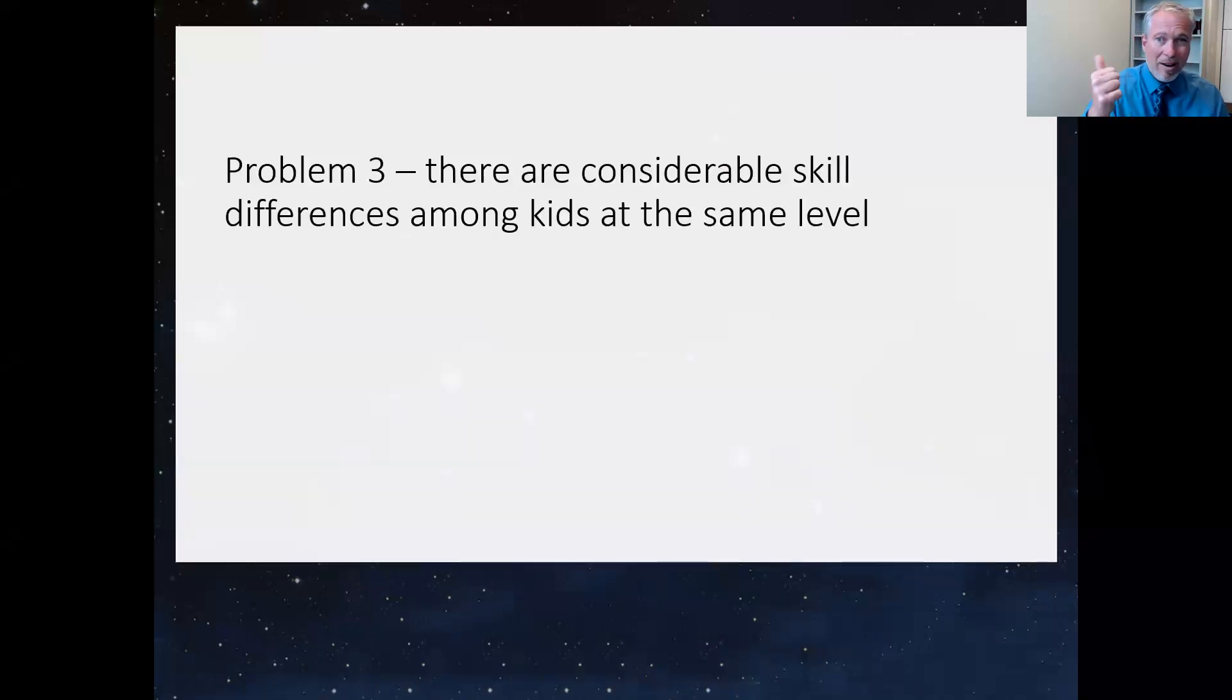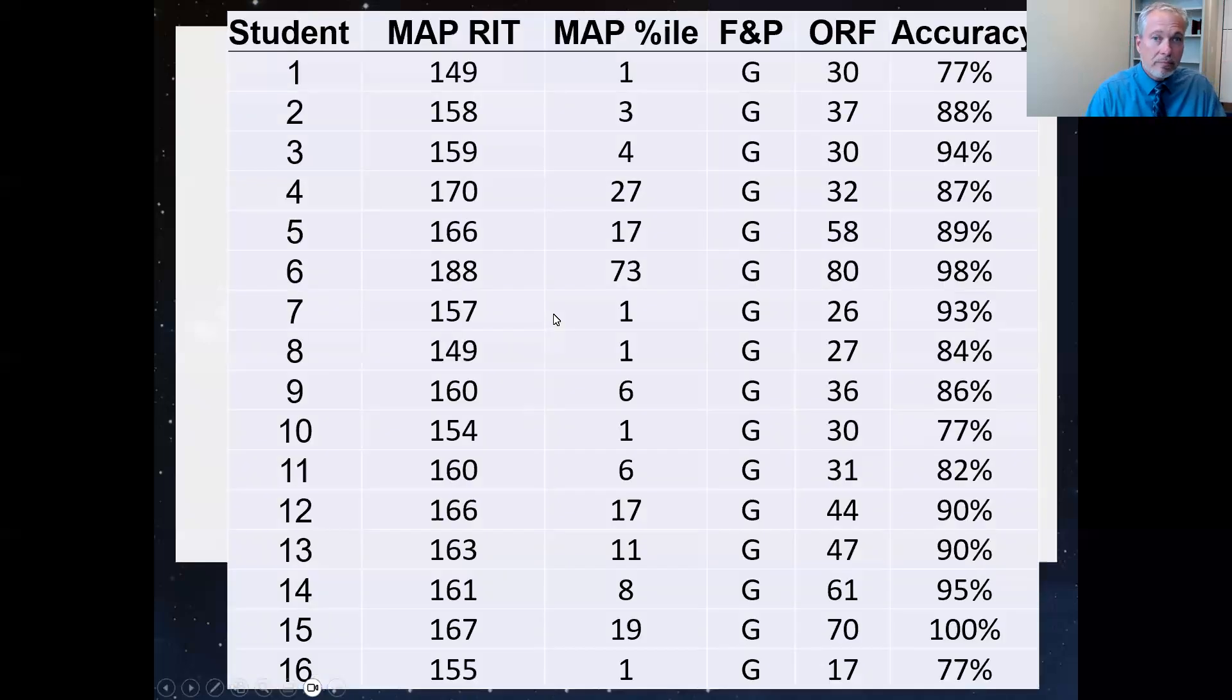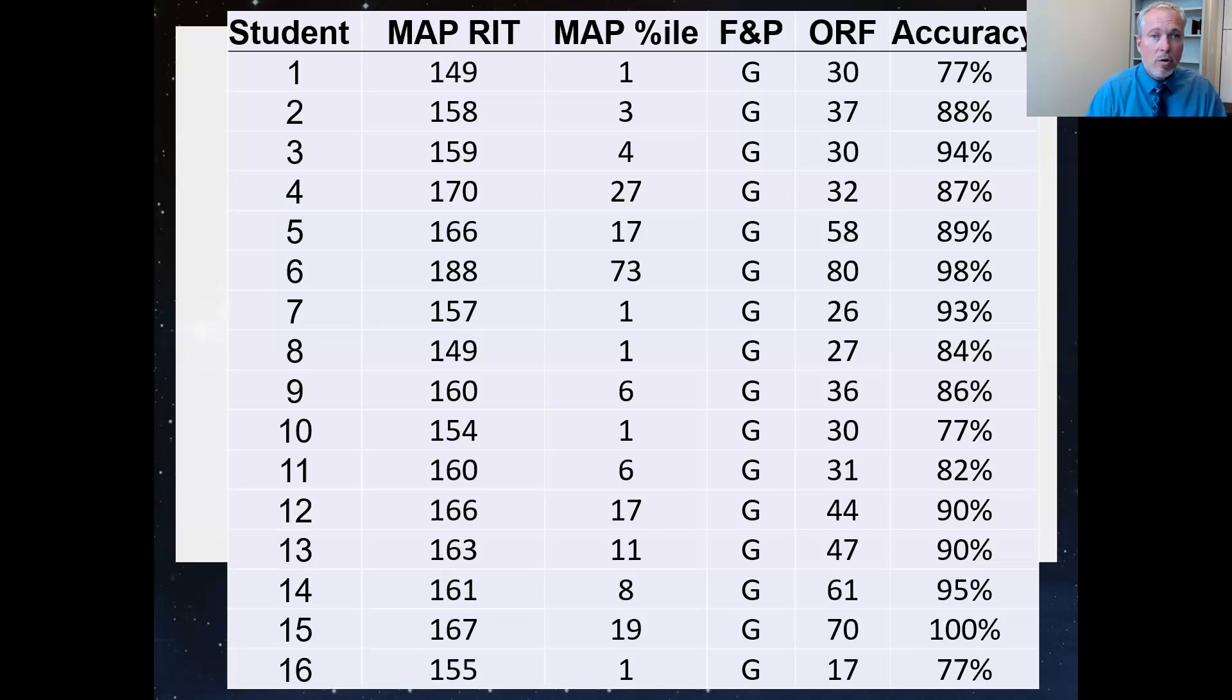And problem number three is number one is they are inaccurate data. Number two, the kids can't read the book that's at their level if they're a low reader. But the third problem is, well, there's just too many differences among kids at the same level. So I went to the teacher, I forget the grade, probably second grade, and I just took the middle section of that teacher's classroom. So these are all kids who had a G. There were 16 kids in this one classroom all had a G, which is a lot. Now, I then look at the other data. So this is the MAP test, and I'm only going to look at the percentile rank. You know, 25th percentile or lower suggests they're struggling. The F&P score or reading fluency, number of words read correctly per minute, and percentage of words read accurately, percentage of words read correctly.